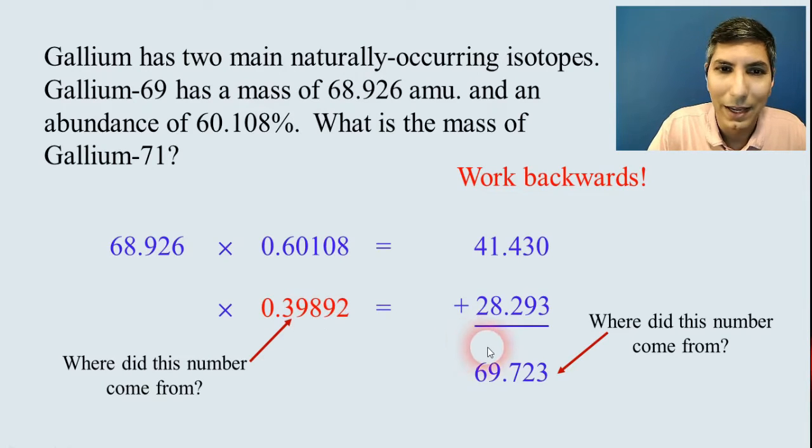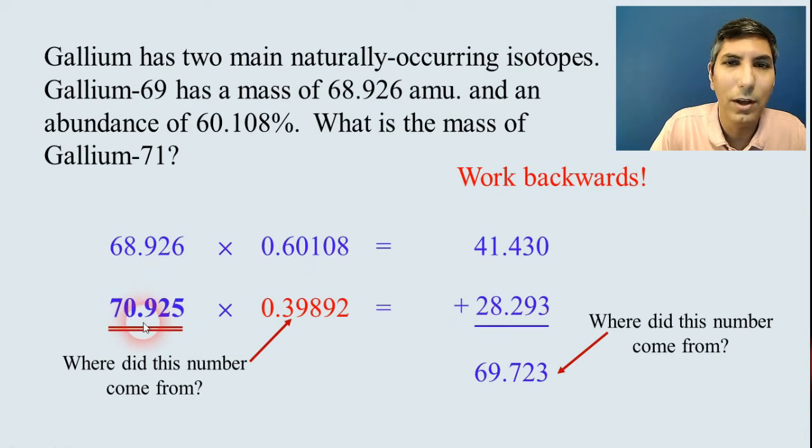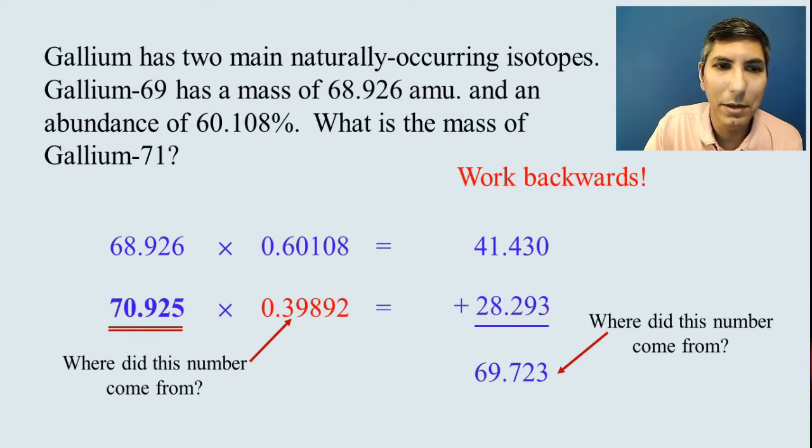Now, we can divide. We just take the 28.293 and divide by 0.39892, and we should get the mass of the other isotope, which is about 70.925. Now, occasionally, they do ask this type of problem on the AP exam. Sometimes they don't, but this is a very good skill to be able to calculate the mass of a missing isotope.